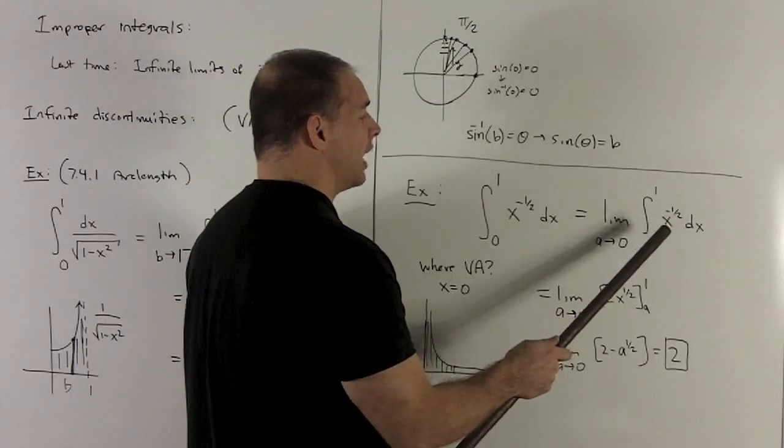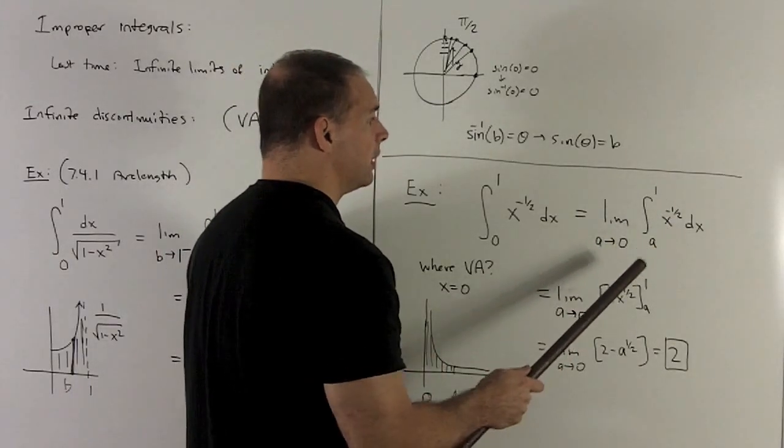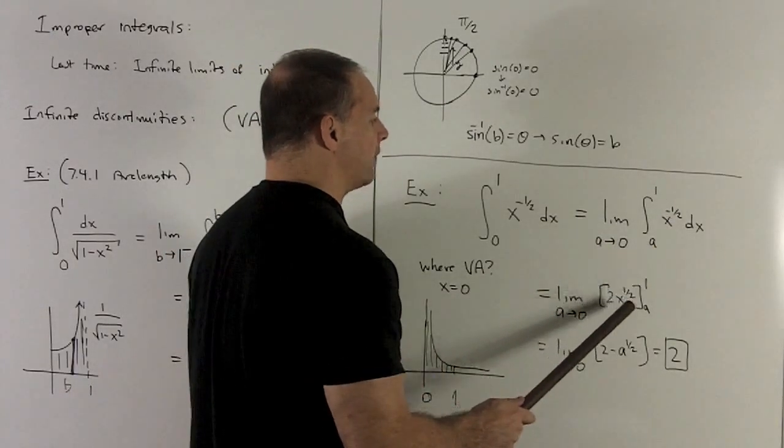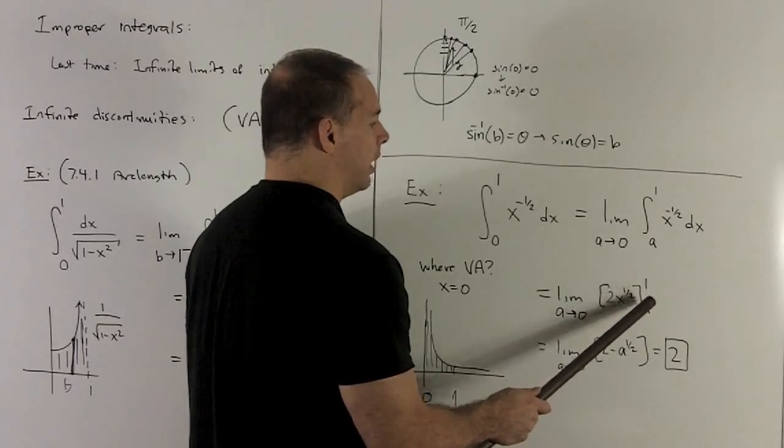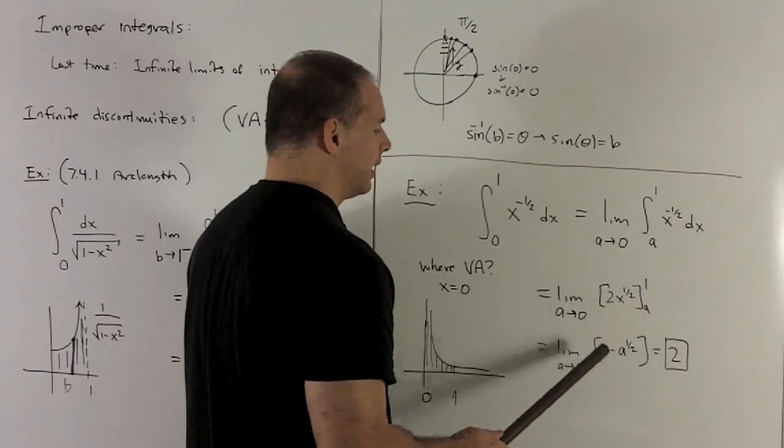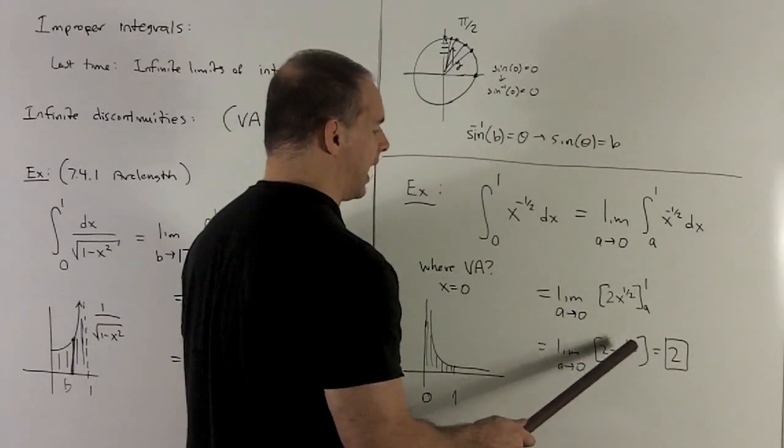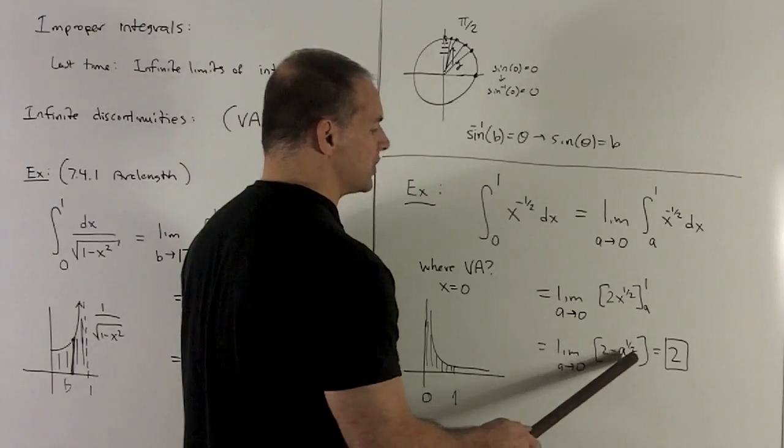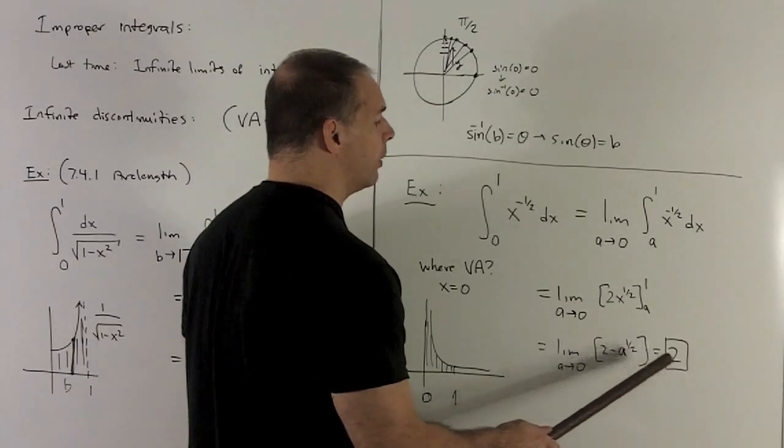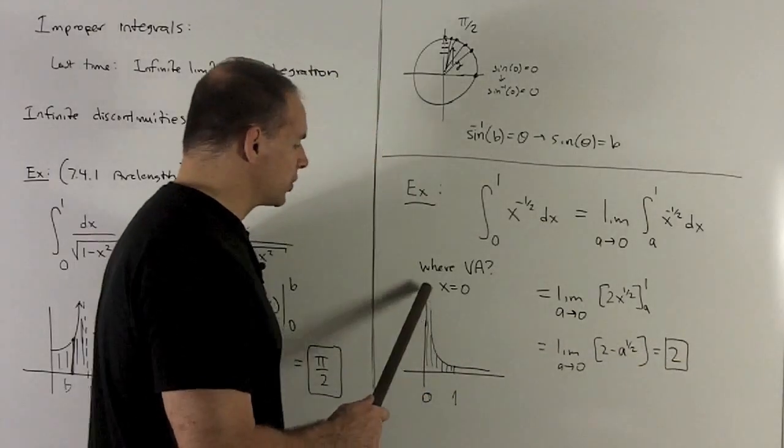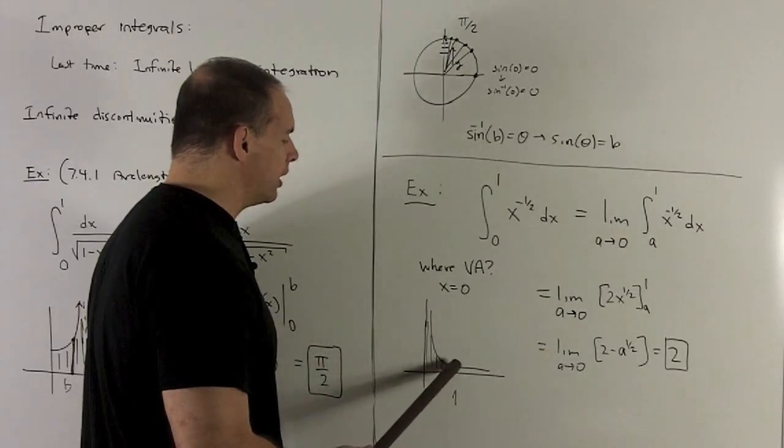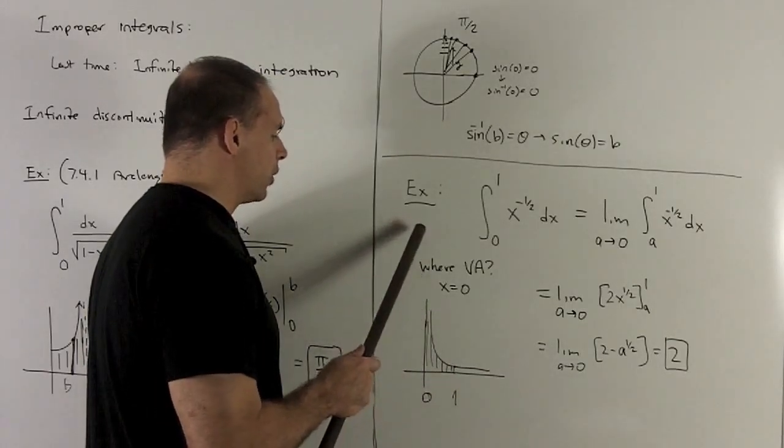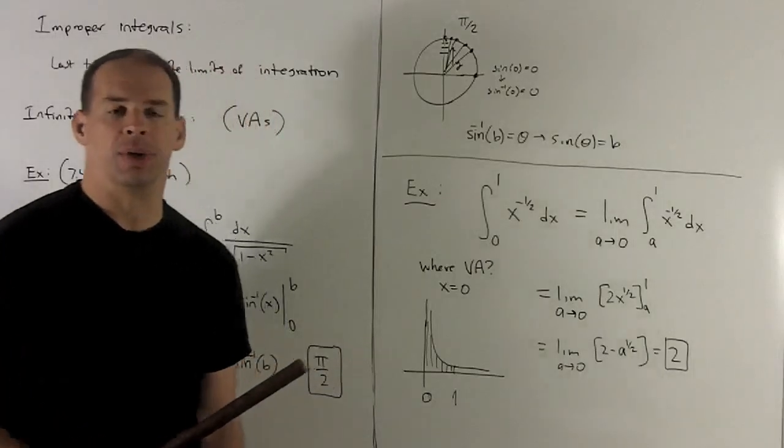We know how to do the antiderivative of this. I add 1 and flip it over. So that's going to give me 2x to the 1/2 going from a to 1 and take the difference. That gives me 2 minus 2a to the 1/2. Limit as a goes to 0, just sends this piece here to 0, and I get 2. So 2 is going to be the area under this region from 0 to 1 as my graph goes all the way up to that vertical asymptote.